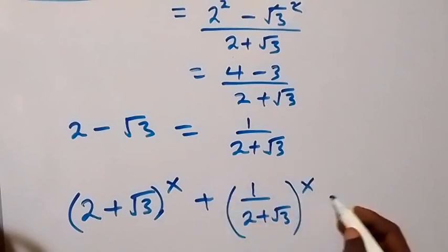We let u equal (2 + √3)^x, so the equation becomes u + 1/u = 4. We clear this fraction by multiplying through by u, giving u squared plus 1 equals 4u. Rearranging, we get u squared minus 4u plus 1 equals 0.